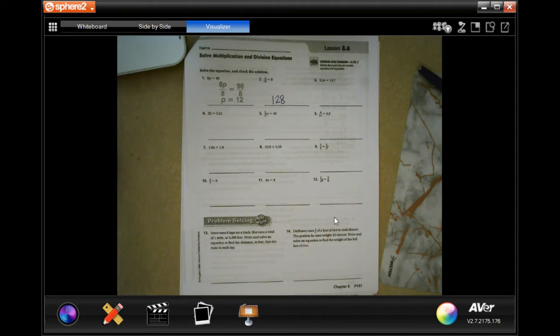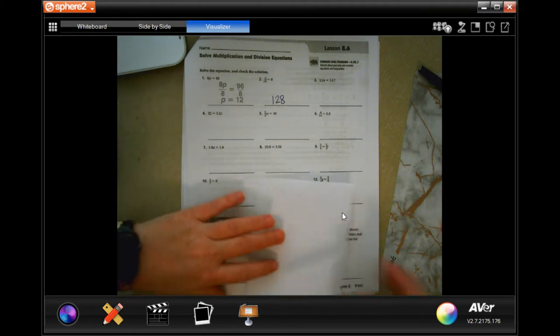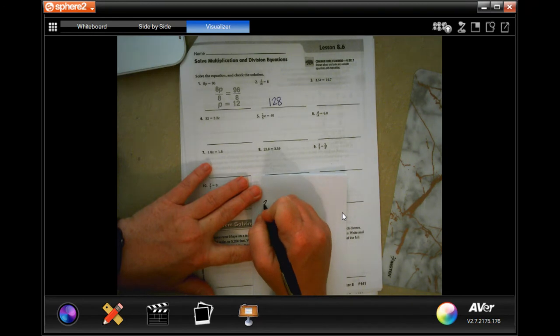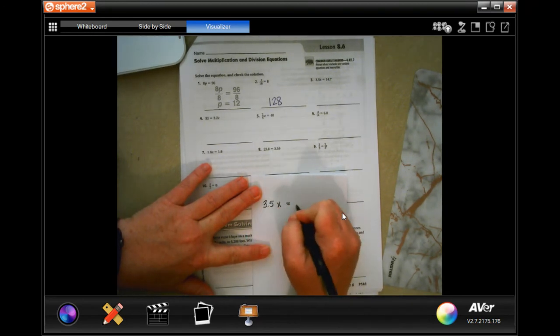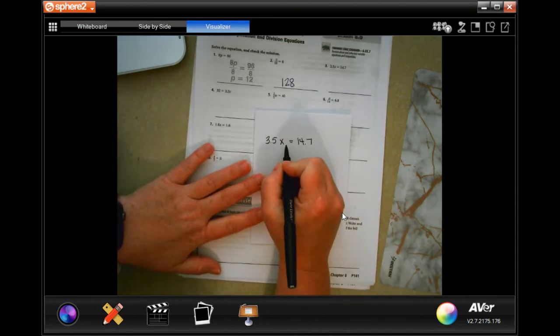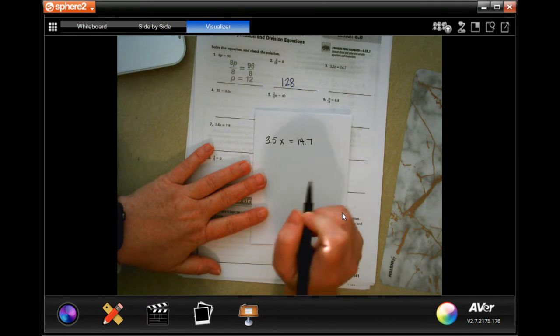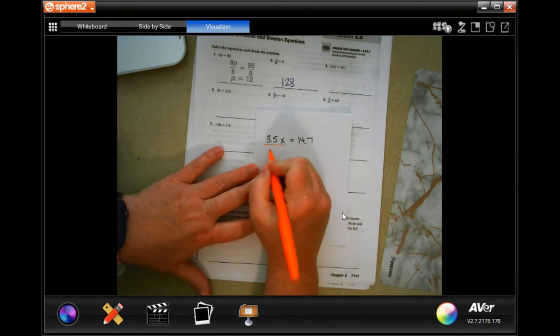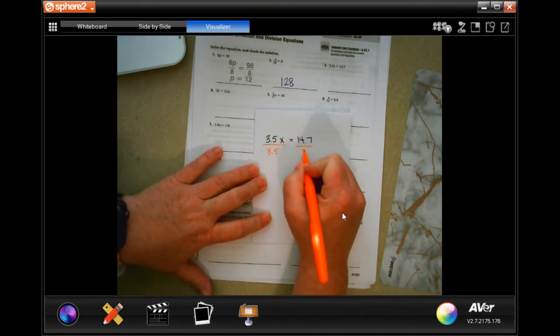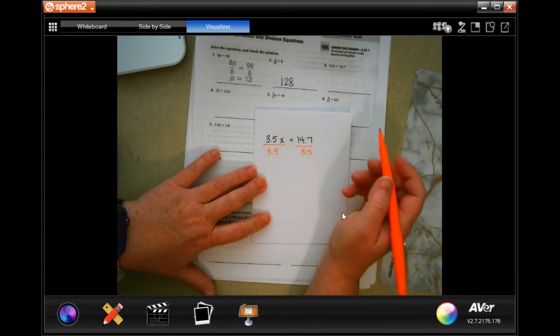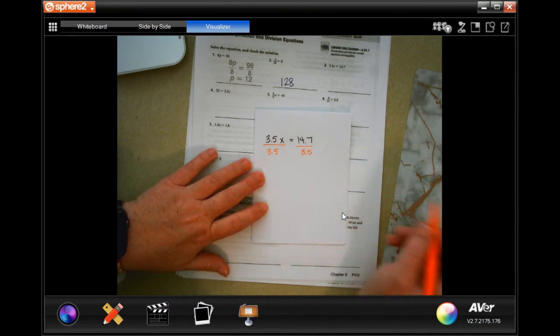Next, it says 3.5x equals 14.7. When you have a number next to a letter, that means multiply. So, what we're going to do is we're going to divide by 3.5, divide by 3.5. They're trying to scare y'all with this decimal in here, but a decimal is really nothing but a normal number, guys. It's just not that bad.